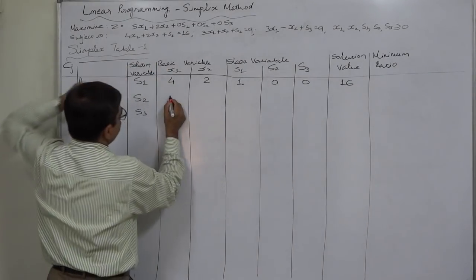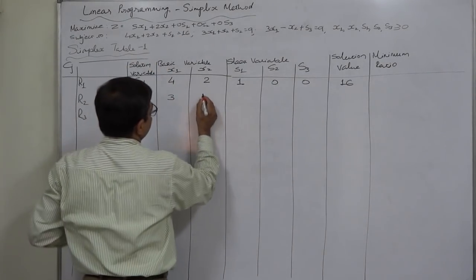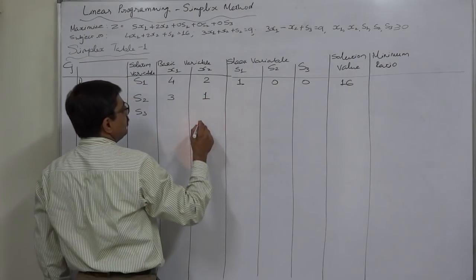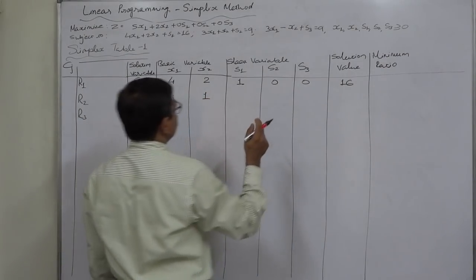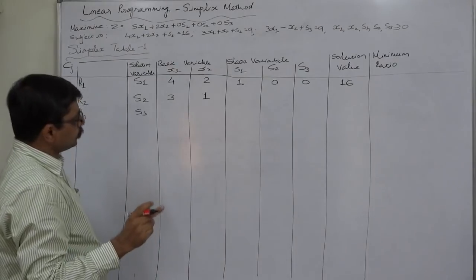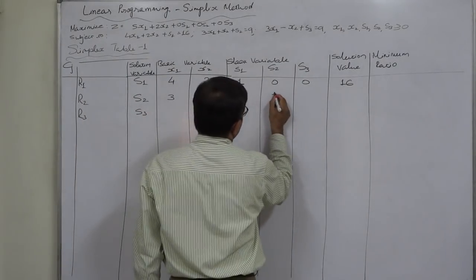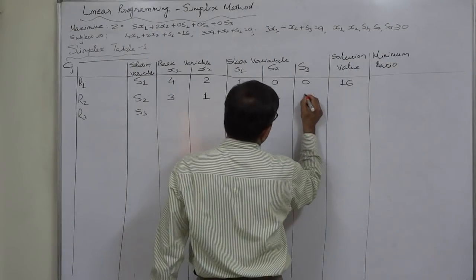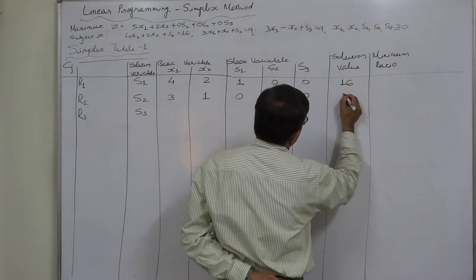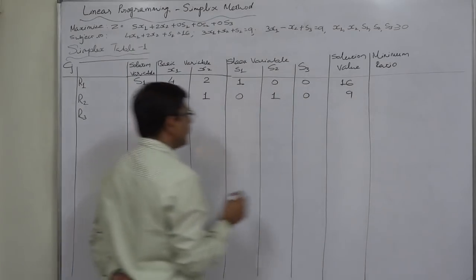In the second constraint the coefficient of X1 is 3, for X2 it is 1, S1 is 0, S2 is 1 and S3 is 0, and solution value is 9.